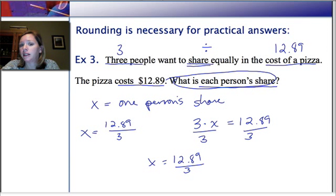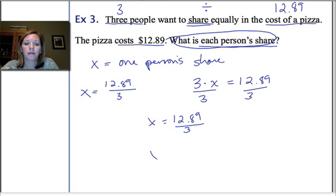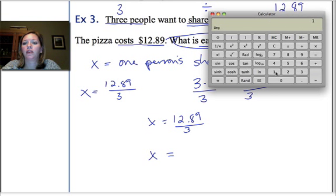Now, again, I don't know exactly what that is, but I know it's about 4. It's a little bit more than 4 because 12 divided by 3 is 4. And so, let's pull up our calculator and do the math here. So, 12.89 divided by 3, let's see what that is, is 4.296666666 repeating.